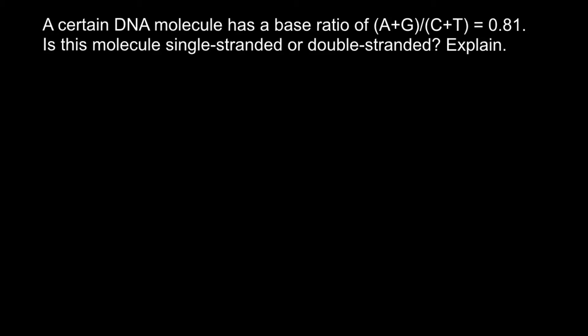In order to solve this problem, we have to use Chargaff's rule. This rule states that the number of purines in any double-stranded DNA would equal the number of pyrimidines. More specifically, the number of adenines always equals the number of thymines, and the number of cytosines equals the number of guanines.